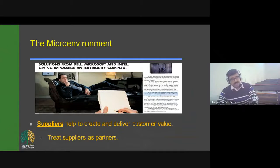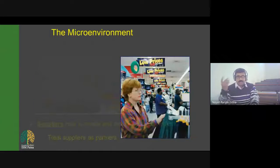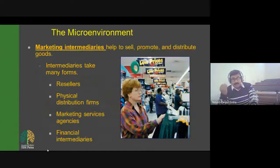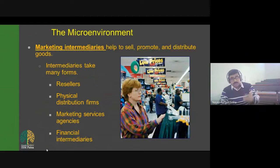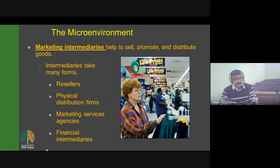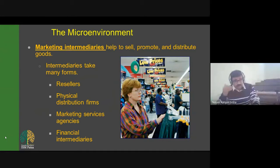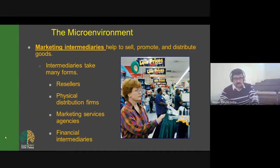The macro environment is used to provide suppliers the means to create and deliver customer value, treating suppliers as partners in planning. In the micro environment, intermediaries are also a key variable — they help to sell, promote, and distribute. Intermediaries can take many forms: resellers, physical distribution firms, marketing services agencies, and financial intermediaries.